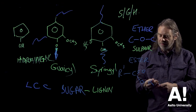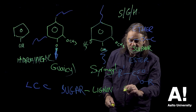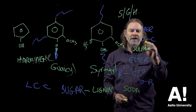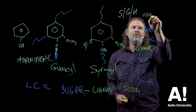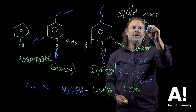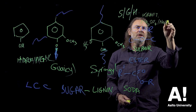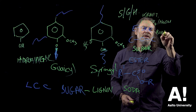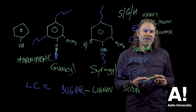Things like straw and bagasse will use what's called soda pulping. For wood, we use kraft pulping, which is a mixture of sodium sulphate and sodium hydroxide, or we use bisulphite. In both cases, these are sulphur pulping methods.